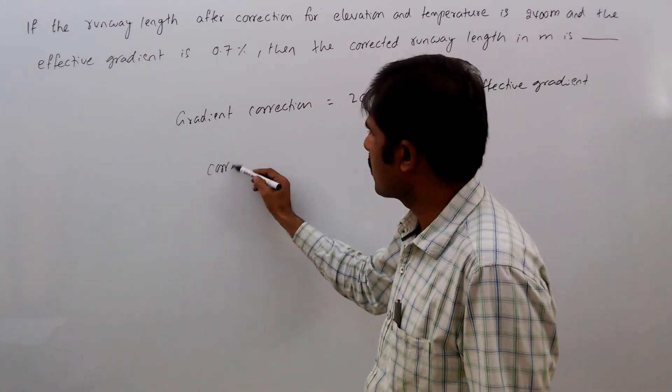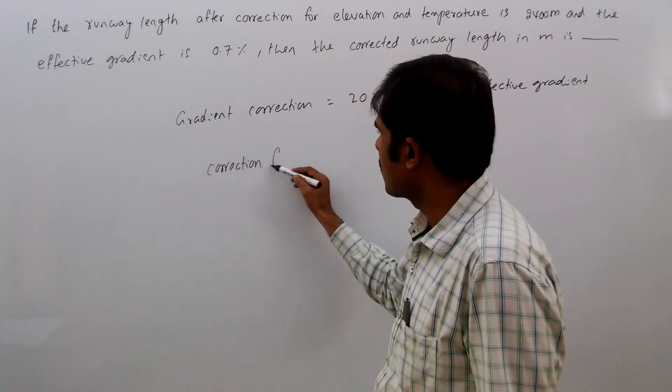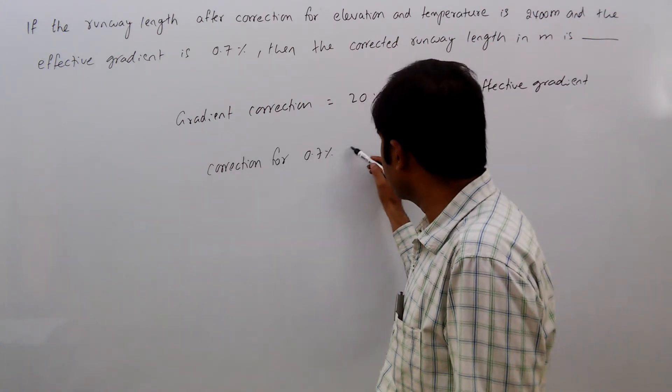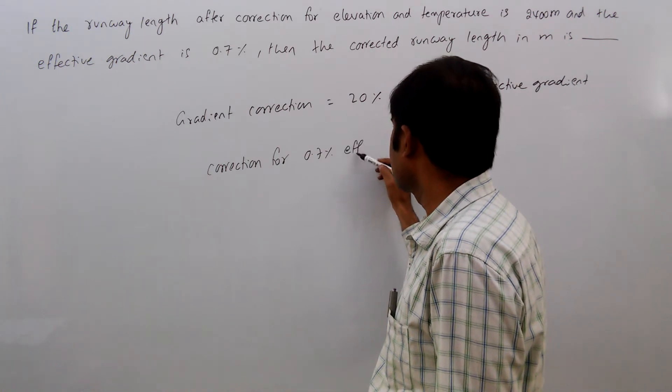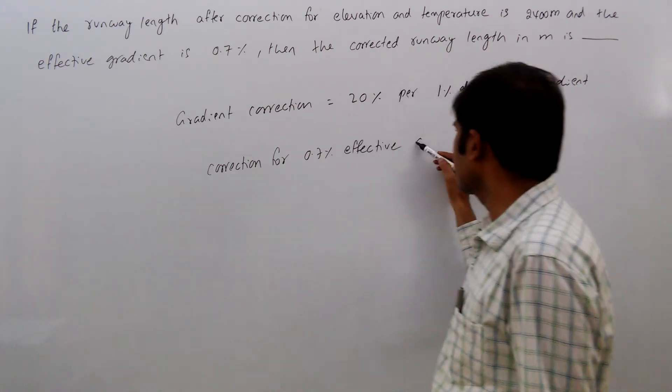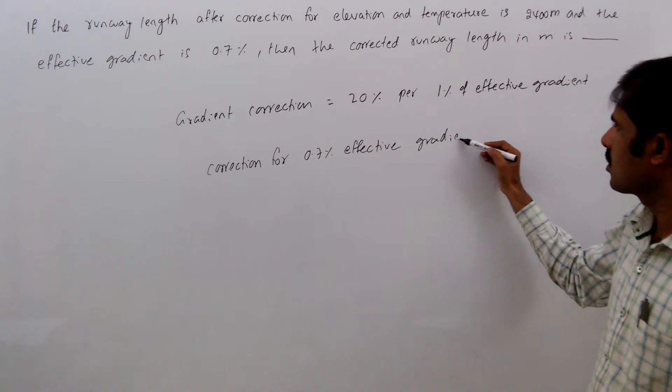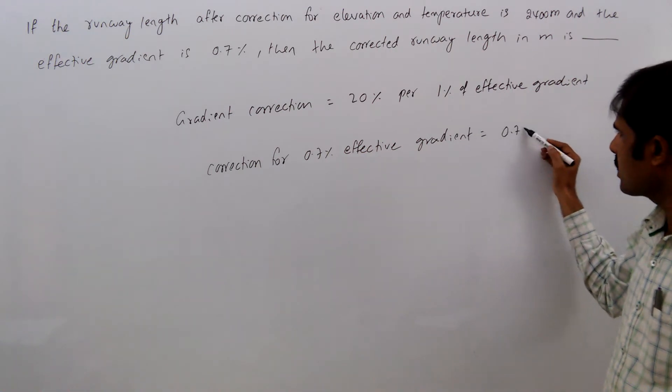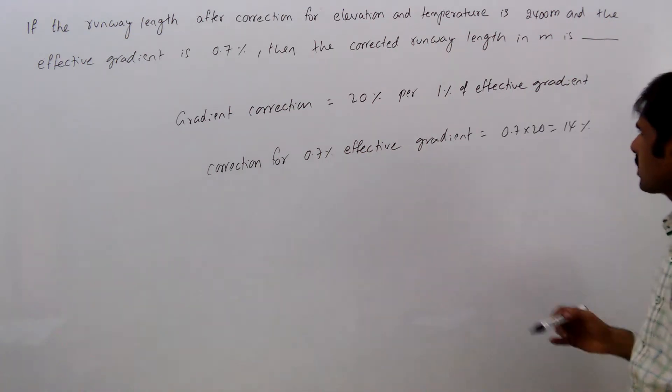Correction for 0.7 percent effective gradient equals 0.7 into 20, that equals 14 percent.